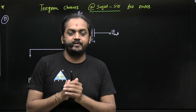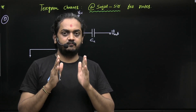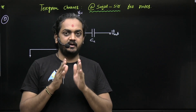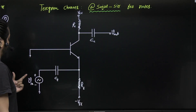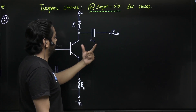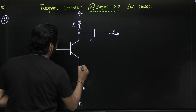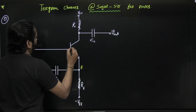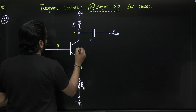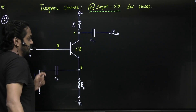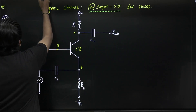Hello students, we are studying amplifier analysis and this is Part 4. If you are a new student, watch all the previous classes first to get a better idea. Here we want to find voltage gain V_out/V_in, input impedance, and output impedance. The input is given at the emitter terminal and output is taken from the collector, so this is common base configuration. Common emitter and common collector were already completed in previous classes.